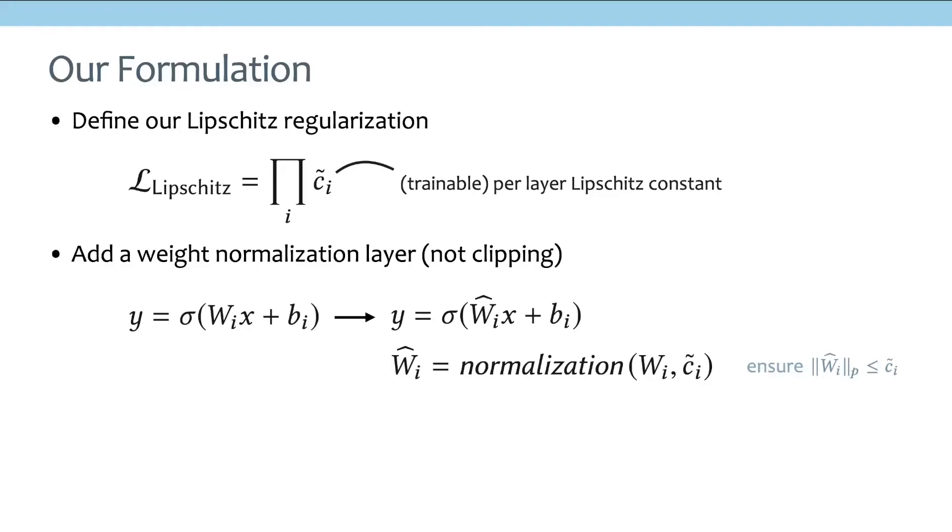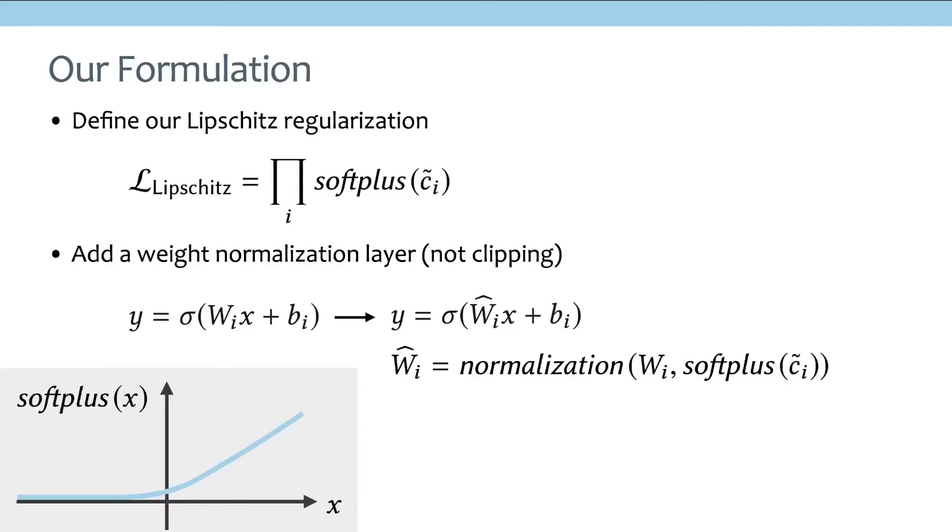And this normalization depends on what kind of C tilde you end up getting. And just intuitively, this normalization basically wants to ensure that the matrix p-norm of this normalized weight is going to be bounded by our learned C tilde. But there's one tiny issue here. In this formulation, although it rarely happens in practice, you can still get an invalid regularization if you have negative C tilde. So in order to avoid that issue, we basically apply the softplus on the learned C tilde, which is a simple parameterization that just guarantees the output is going to be positive.